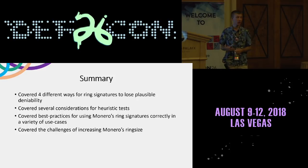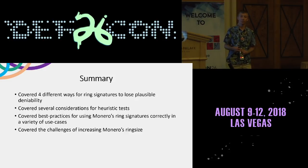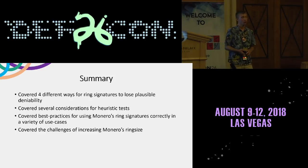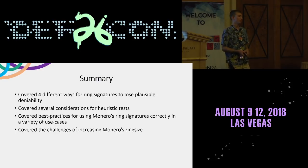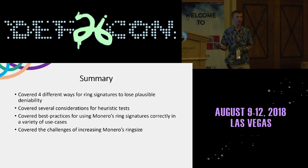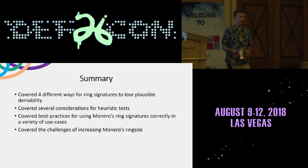In summary: ring signatures are the weakest point of Monero's privacy. They are currently the only trustless system we have for hiding the sending output. We covered ways ring signatures can be compromised, heuristics that make funds appear suspicious, best practices for using ring signatures across different use cases, and the challenges of increasing ring size. Bullet proofs offer an opportunity to reduce verification time and transaction costs, but we still need further improvements to protect against heuristics.